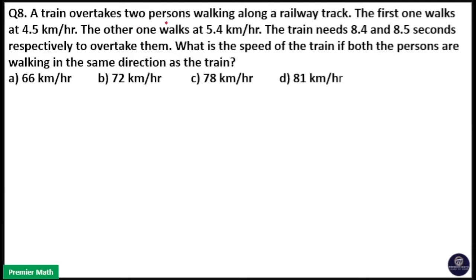A train overtakes two persons walking along a railway track. The first one walks at 4.5 km per hour and the other one walks at 5.4 km per hour. The train needs 8.4 and 8.5 seconds respectively to overtake them. What is the speed of the train if both persons are walking in the same direction as the train?